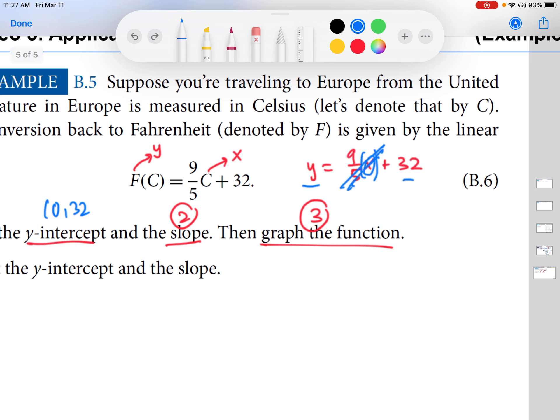By writing this in the y equals mx plus b form, hopefully that rings a bell as to what the slope is. Remember, in the y equals mx plus b form that we typically work with in linear functions, the m is the slope, and the m is the coefficient of x. So, if I compare these two here, I see that m is 9 over 5. So, that is our slope. So, m equals 9 over 5.